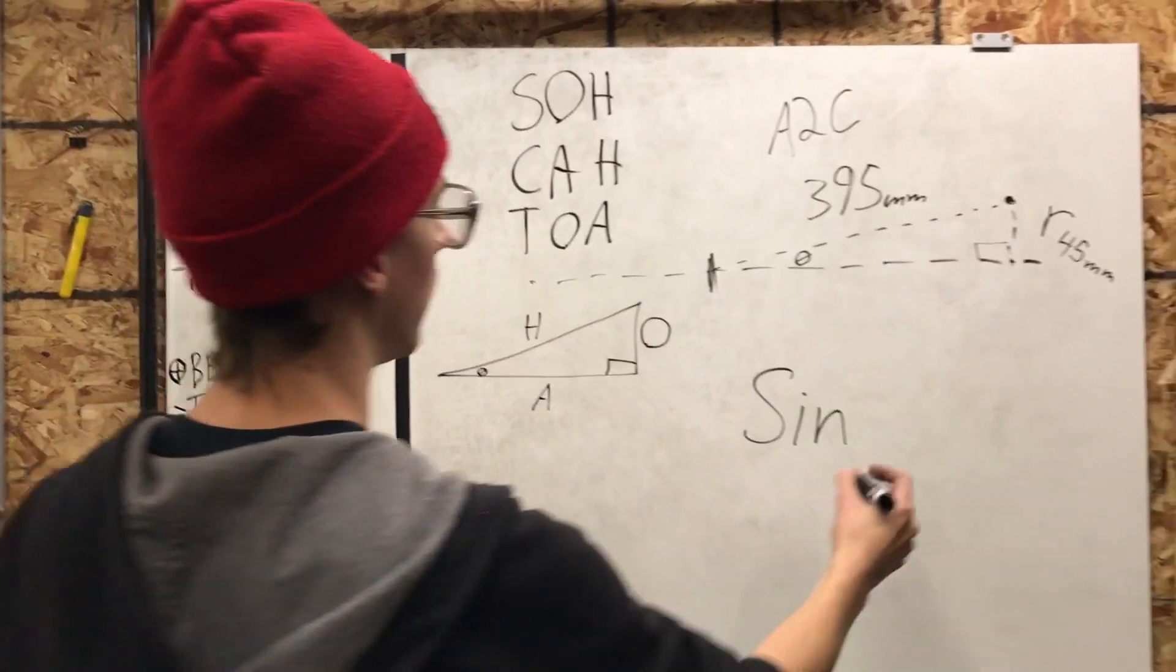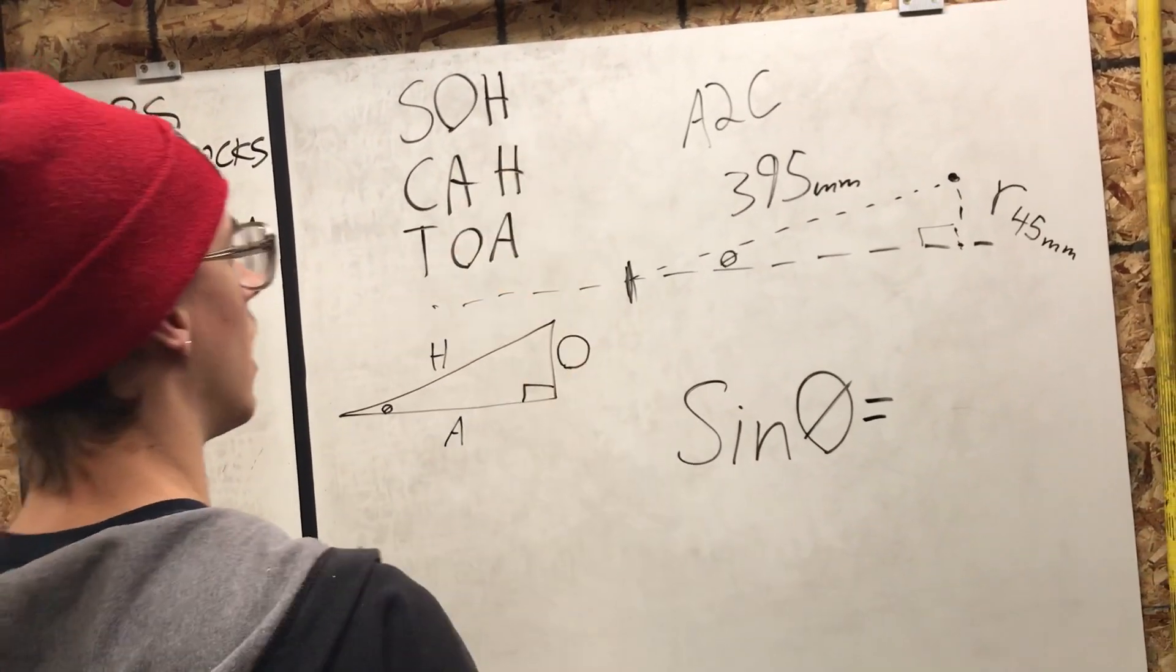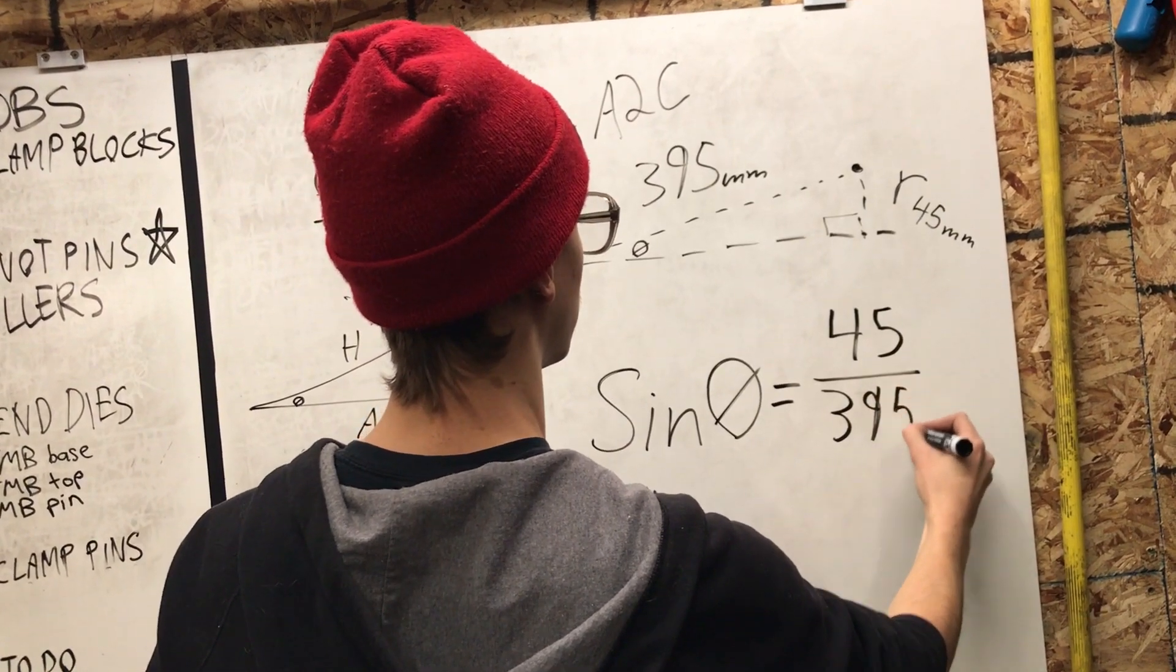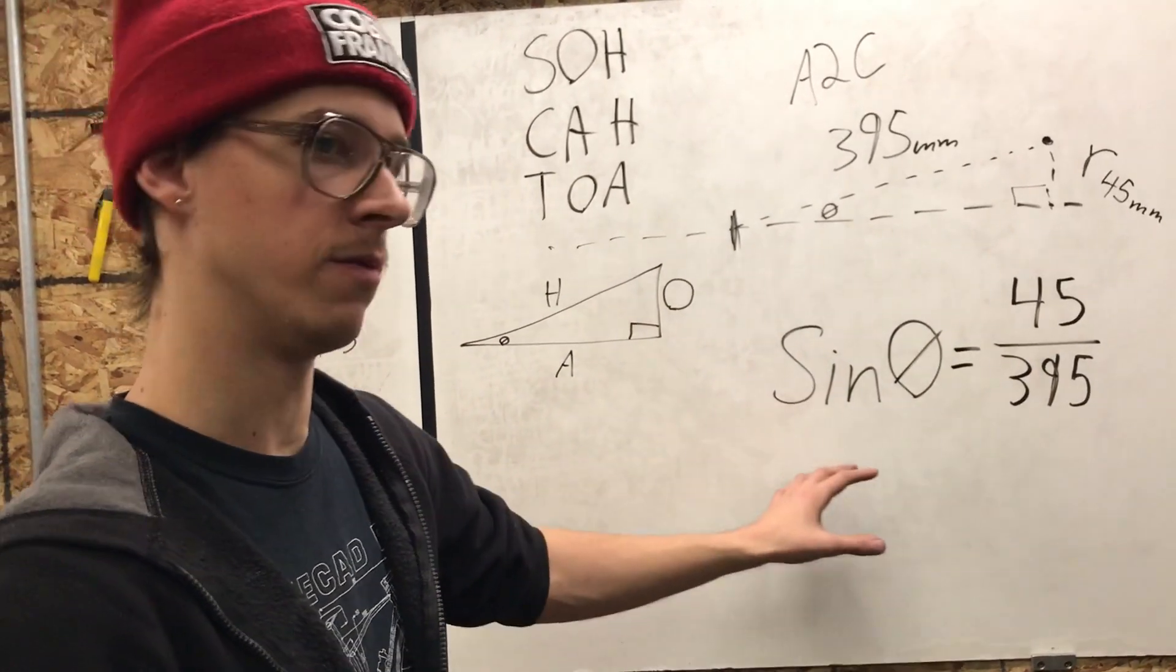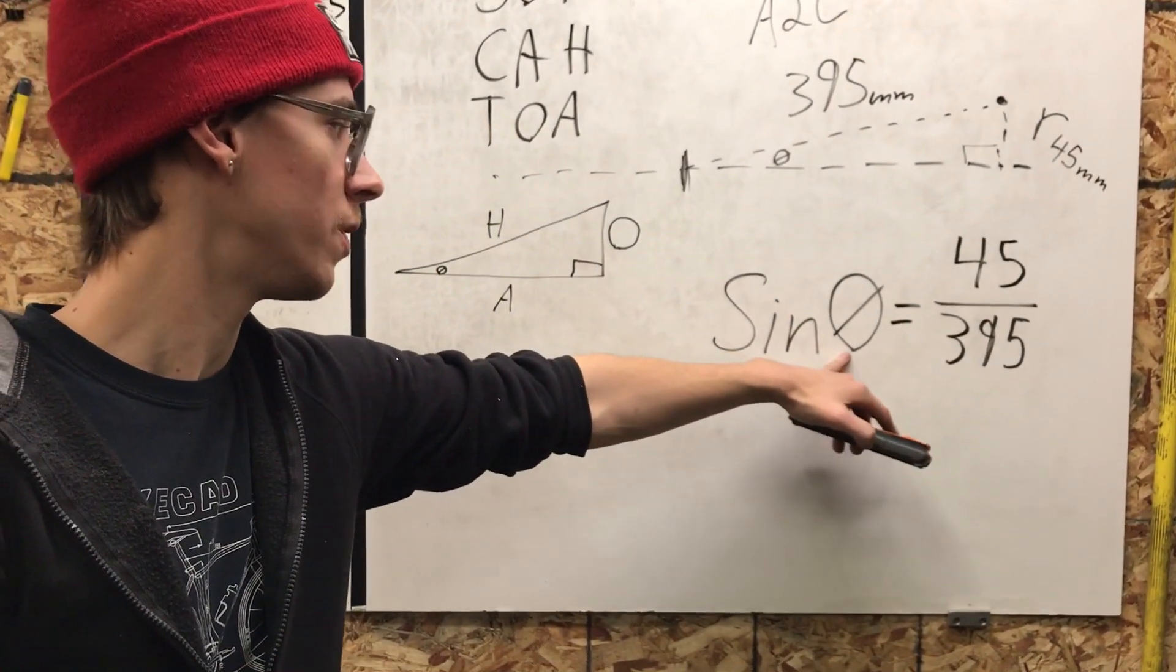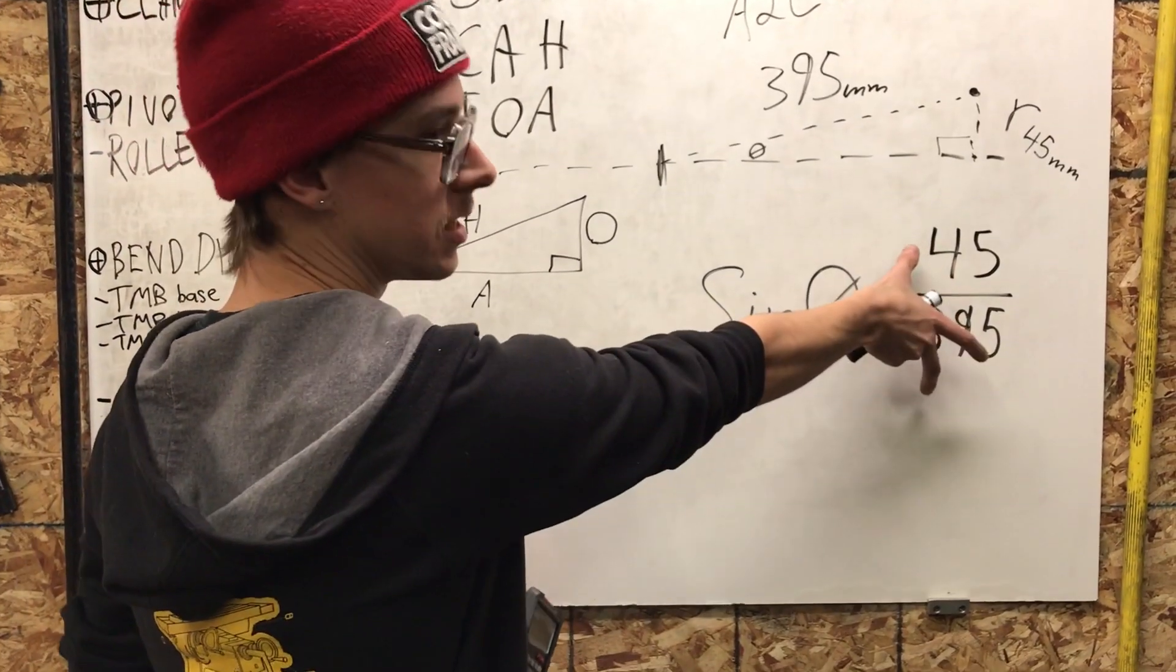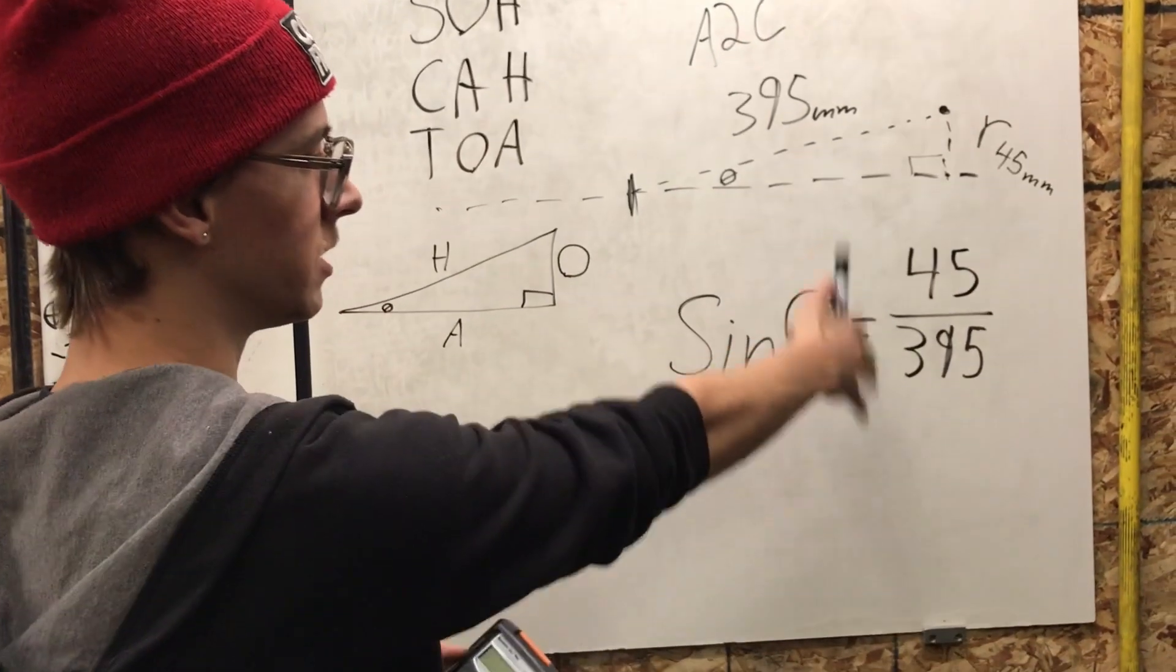And it's sine of theta equals opposite over hypotenuse. So it would be 45 over 395. So sine of this angle equals that. And so you can get out your calculator, and you can solve for that. So this is sine of theta equals that. So that means we're trying to figure out what this degree is. And so if we knew the number of degrees, then we could type into our calculator the number of degrees, and then you press the sine button, and then it would tell you what this is equal to, and you'd have to cross-multiply or whatever to solve for that, which is just basic algebra.